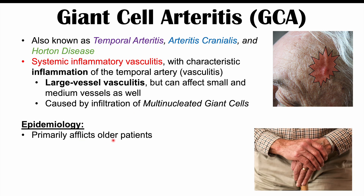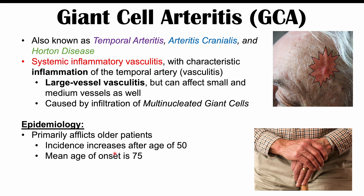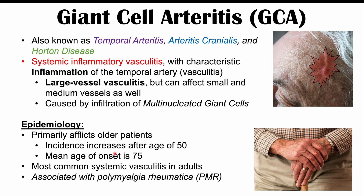This condition primarily afflicts older patients. The incidence increases after the age of 50, and the mean age of onset is 75. This is actually the most common systemic vasculitis in adults. It is associated with polymyalgia rheumatica, and giant cell arteritis is estimated to affect anywhere from 5 to 30% of polymyalgia rheumatica patients, so it's important to recognize the connections between these two conditions.